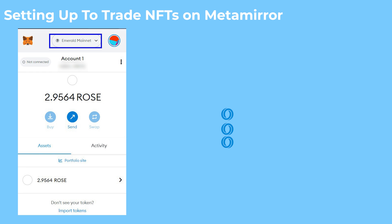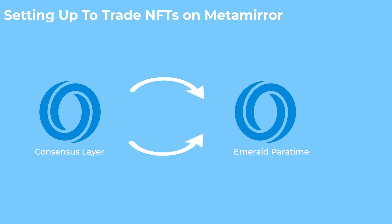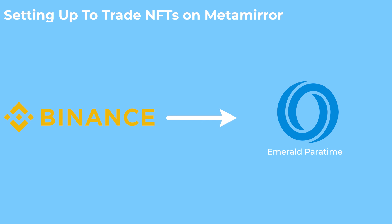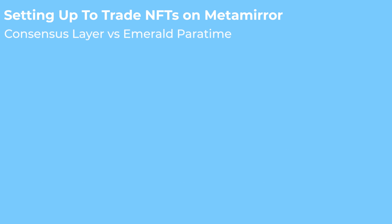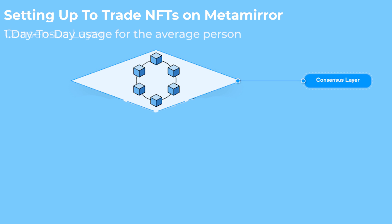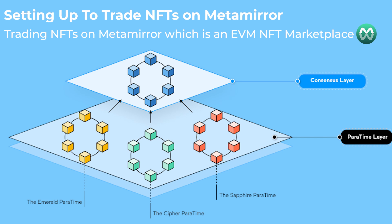Once MetaMirror is properly configured to Emerald, we would need to deposit ROSE tokens to that wallet. These tokens will be used to purchase the NFTs and cover gas fees. To go about this, we would need to bridge ROSE tokens from the consensus layer to the Emerald Paratime. We would not be able to transfer ROSE tokens from centralized exchanges like Binance or CoolCoin to the Emerald wallet because those exchanges only support ROSE transfers on the consensus layer. The consensus layer is the base layer of the Oasis protocol where everyday interactions like staking and token transfers from exchanges all take place. The Emerald Paratime is for EVM-based applications like development of dApps and things like buying and selling NFTs on MetaMirror. Take note of that — it will be useful as you continue to explore the protocol and its sister applications.